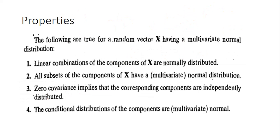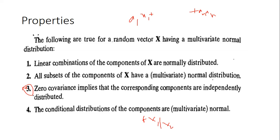Now let's see some properties of multivariate normal distributions. For a random vector x having a multivariate normal distribution: first, any linear combination of the components of x is normally distributed — for example a1*x1 + a2*x2 + ... + an*xn also follows a normal distribution. Second, all subsets of components of x have a multivariate normal distribution. Third, zero covariance implies the corresponding components are independently distributed — this result is valid only for normal distributions. Fourth, the conditional distribution of the components is normal.